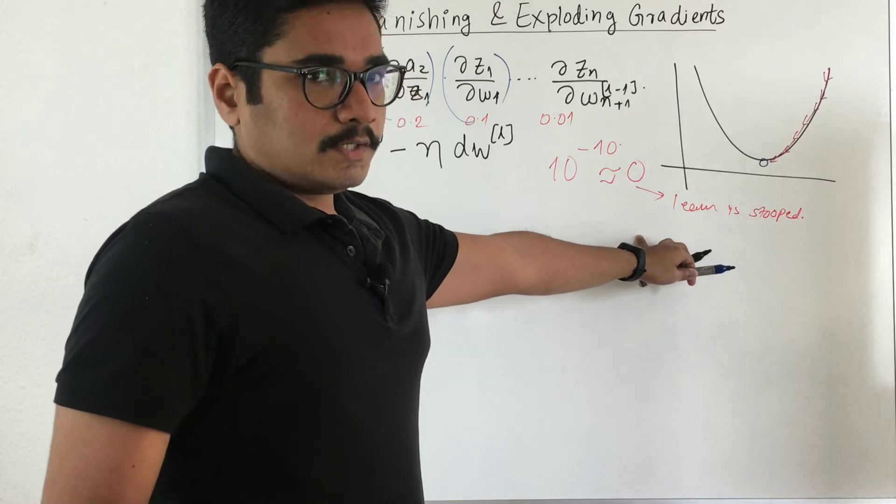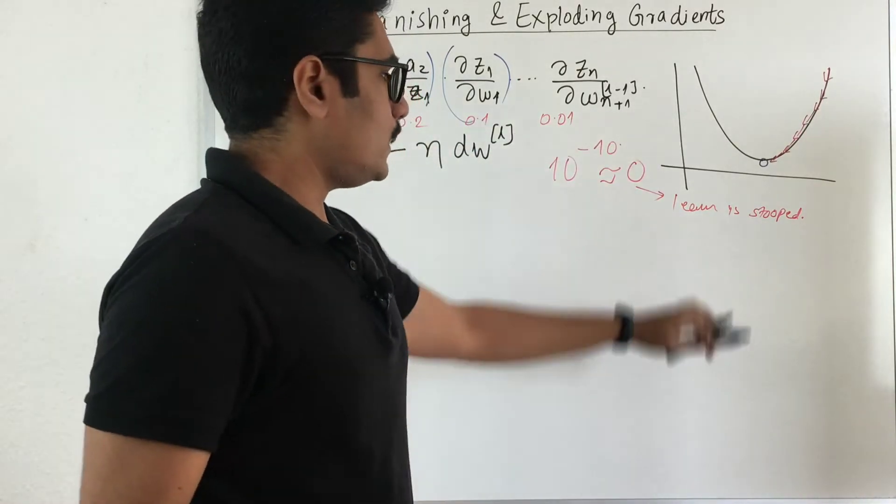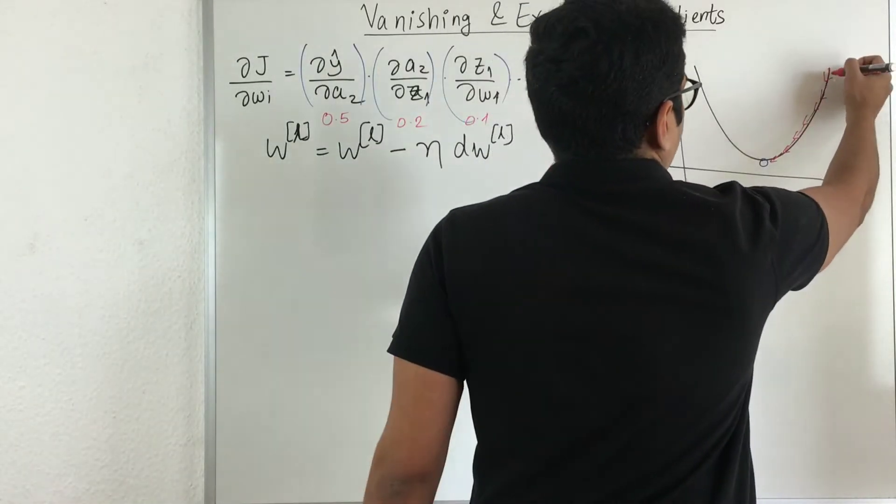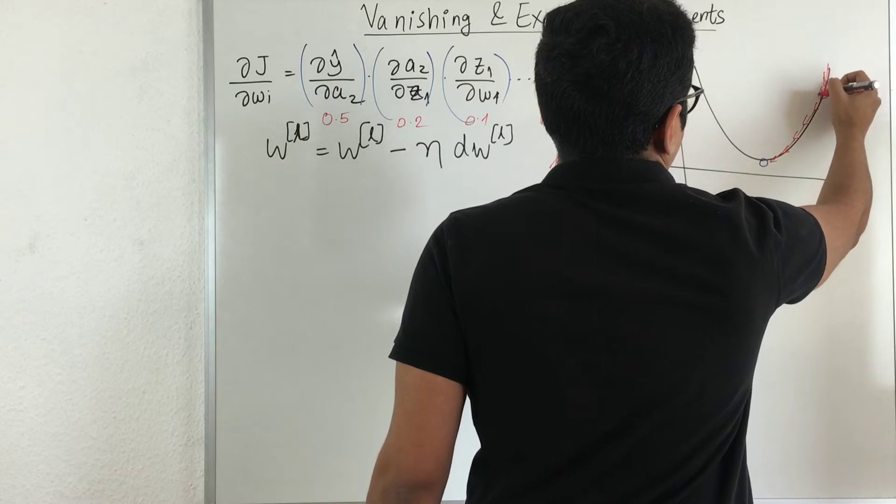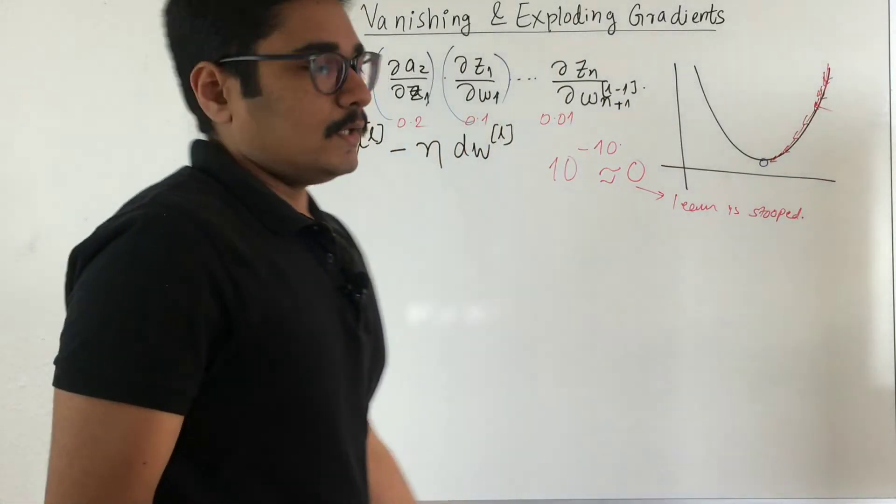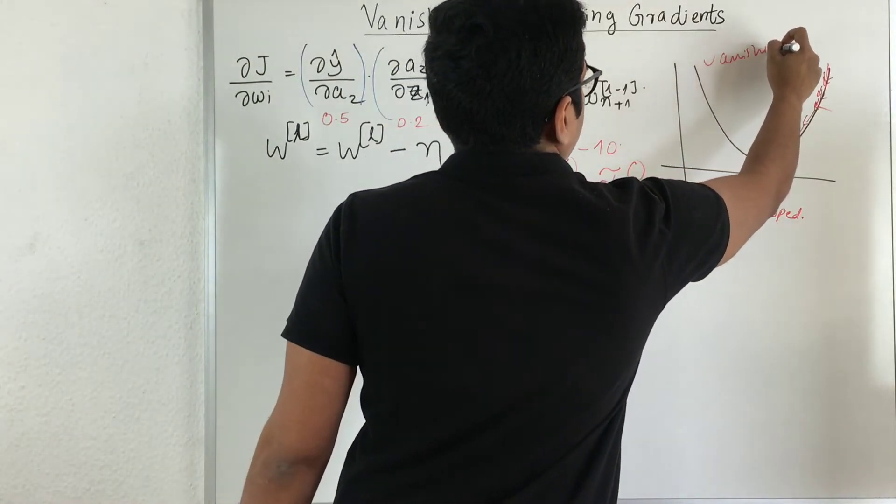But ideally your learning should not stop because your gradient values are very small, that is it converged to 0. If you want to see, like you have some larger step then you just move down and somewhere in between you got lost. So that's essentially called as vanishing gradient problem.